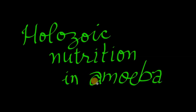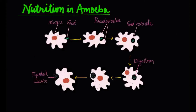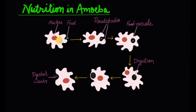Now we are going to discuss nutrition in amoeba, which is holozoic kind of nutrition. Amoeba is a single-celled organism that is nucleated and has finger-like projections over the body known as pseudopodia — pseudo means false, podia means foot. When a food particle approaches near the amoeba, these pseudopodia extend around the food particle and fuse over it, forming a food vacuole. Inside this food vacuole, the food is digested and absorbed.